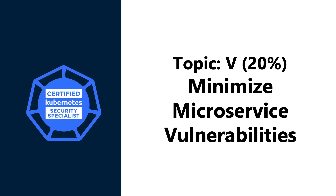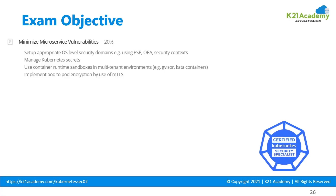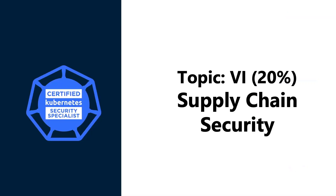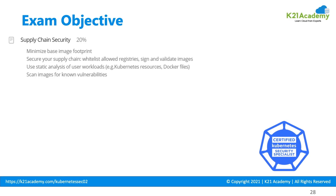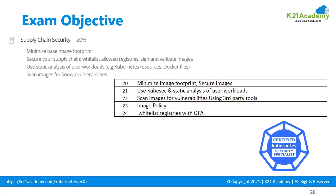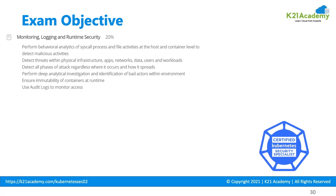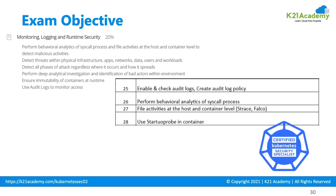Topic 5: Minimizing Vulnerability of Microservices, weighed at 20%, covers managing secrets, setting up security domains, and implementing port-to-port encryption. Topic 6: Supply Chain Security, weighed at 20%, focuses on securing the supply chain with whitelisted registries, signing and validating images; Kubesc and static analysis are also included. Topic 7: Monitoring, Logging and Runtime Security, weighed at 20%, covers behavioral analytics, threat detection, attack detection, analytical investigation, and monitoring access by using audit logs.